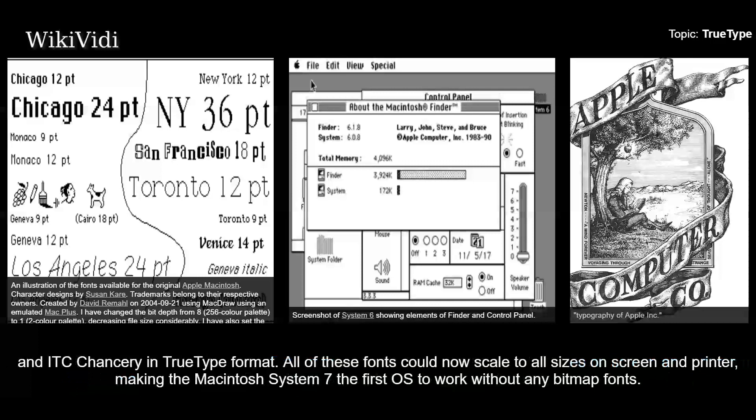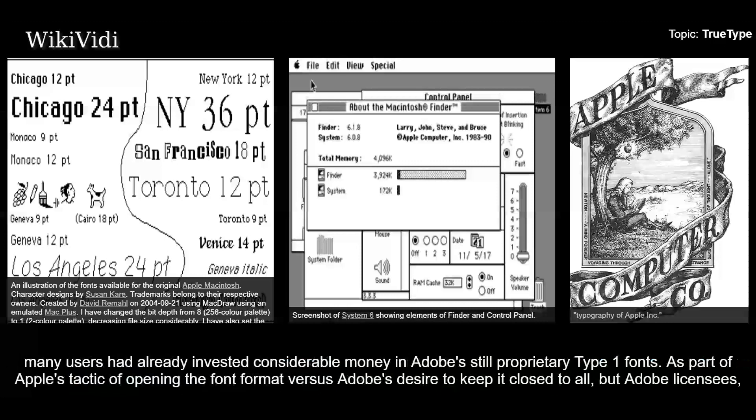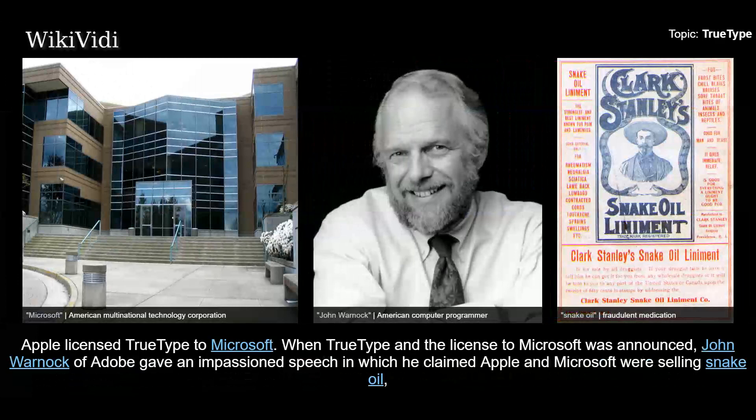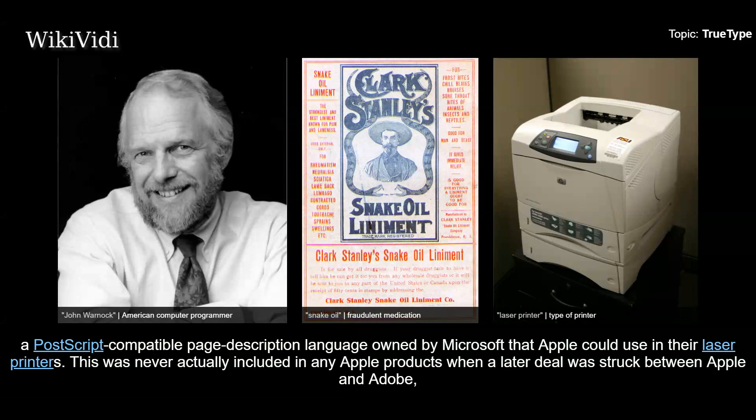The early TrueType systems, being still part of Apple's QuickDraw graphics subsystem, did not render Type 1 fonts on screen as they do today. At the time, many users had already invested considerable money in Adobe's still proprietary Type 1 fonts. As part of Apple's tactic of opening the font format versus Adobe's desire to keep it closed to all but Adobe licensees, Apple licensed TrueType to Microsoft. When TrueType and the license to Microsoft was announced, John Warnock of Adobe gave an impassioned speech in which he claimed Apple and Microsoft were selling snake oil, and then announced that the Type 1 format was open for anyone to use. Meanwhile, in exchange for TrueType, Apple got a license for TrueImage — a PostScript-compatible page description language owned by Microsoft that Apple could use in their laser printers.